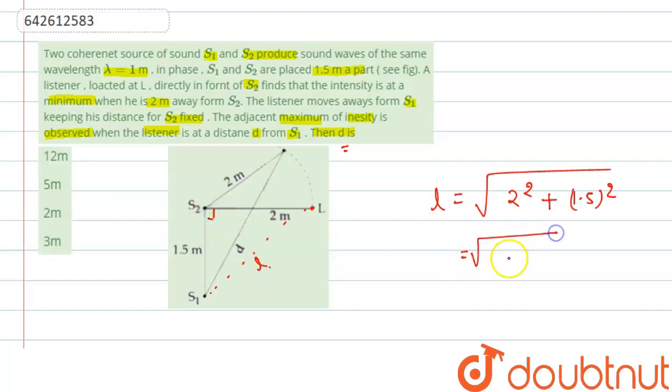will be the square root of 4 plus 2.25. So we can write L equals the square root of 6.25, which is 2.5 meters. So this distance is 2.5 meters.